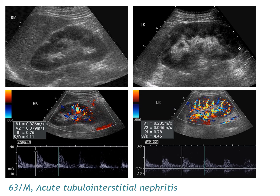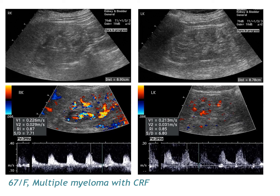Here are other cases of renal parenchymal diseases showing abnormal Doppler spectral findings. A 63-year-old man with acute tubular interstitial nephritis has swollen kidneys with relatively preserved renal parenchymal echo; Doppler ultrasound shows slightly decreased diastolic flow with resistive index of 0.76 and 0.78. A 67-year-old woman with multiple myeloma and chronic renal failure shows a small kidney smaller than 9 cm with markedly increased renal cortical echo; Doppler ultrasound shows markedly decreased diastolic flow with resistive index of 0.87 and 0.85.